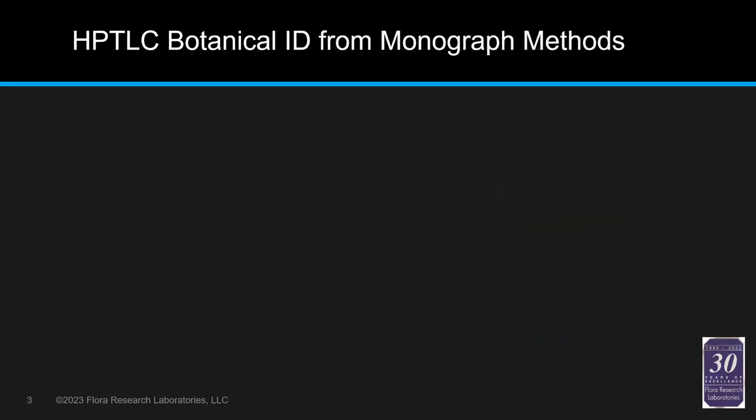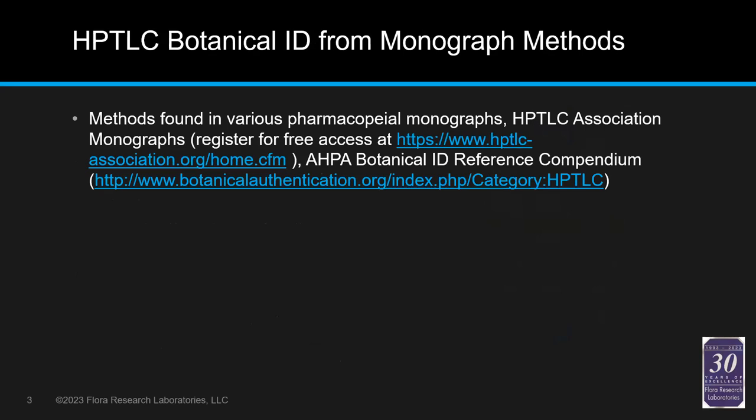When looking at botanical ID from monograph methods, we have a lot of good resources. The HPTLC Association monographs — which you can register for free access to — are very valuable. APA also has a botanical ID reference compendium, and I know that Alchemist helped populate that. There are also EP, USP, and various other monographing bodies that have monographs on identification of botanicals.